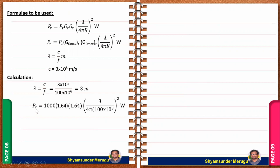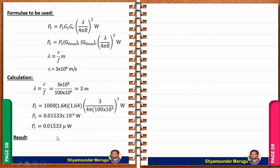Substituting all values in PR: PR equals 1000 × 1.64 × 1.64 × (3 / (4π × 100×10³))². We get PR equal to 0.01533×10⁻⁶ watts, which can be written as 0.01533 microwatts. Therefore, the received power is PR equal to 0.01533 microwatts.